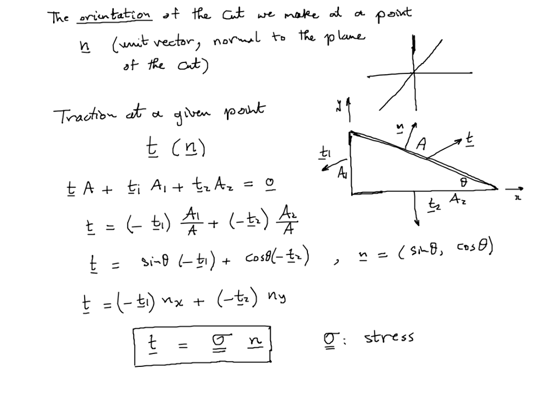Note that N is a vector, T is a vector, and stress relates the traction to the orientation. Therefore, stress is a second-order tensor, which we represent by a matrix — 2×2 in 2D and 3×3 in 3D.